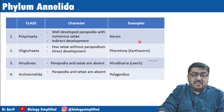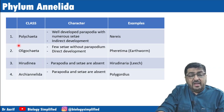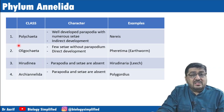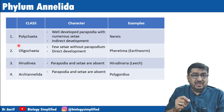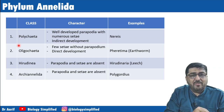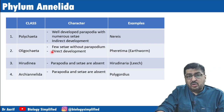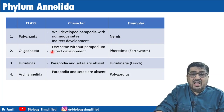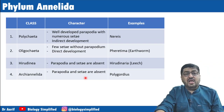As an optional extra point, there is a chance they might ask you the class of earthworm. These extra details are sometimes useful to rule out answers. So it is class Oligochaeta. The classification order is: Kingdom Animalia, Phylum Annelida, Class Oligochaeta. That concludes our discussion on Annelida.